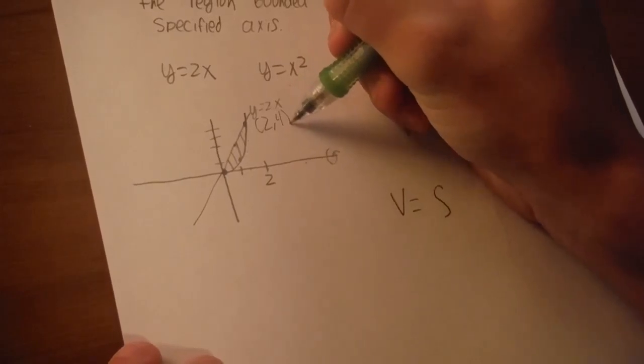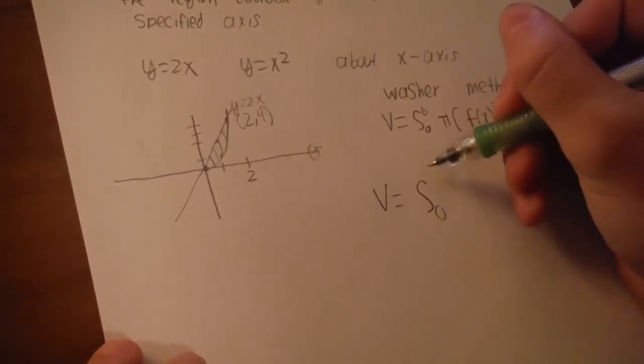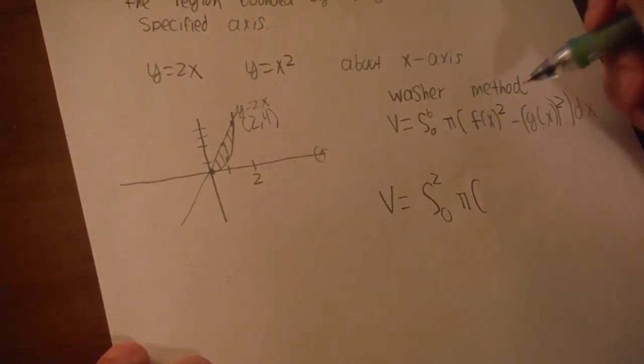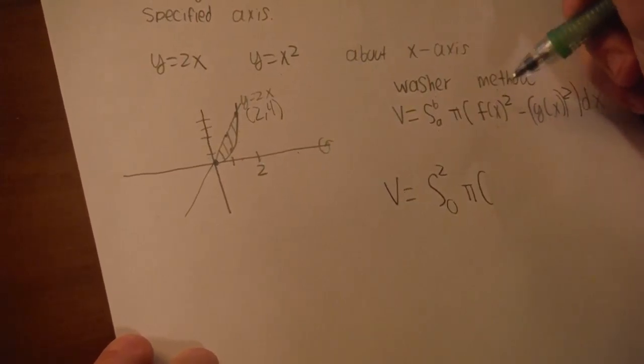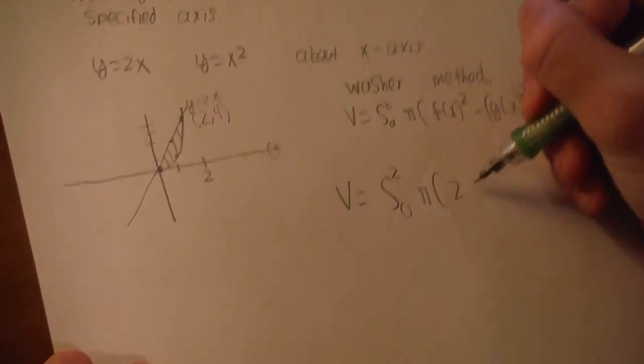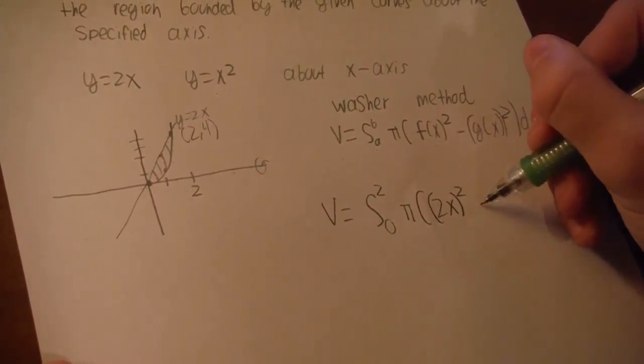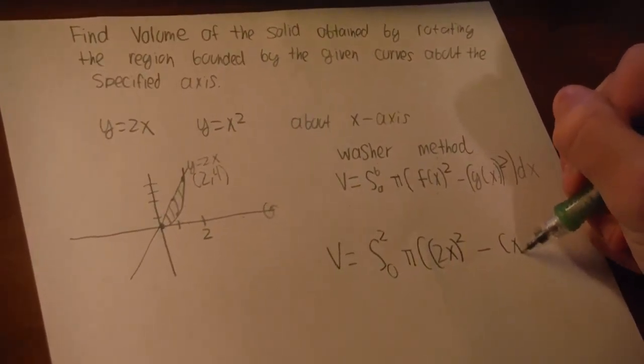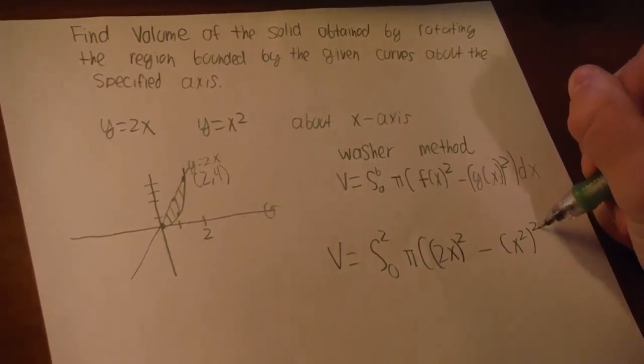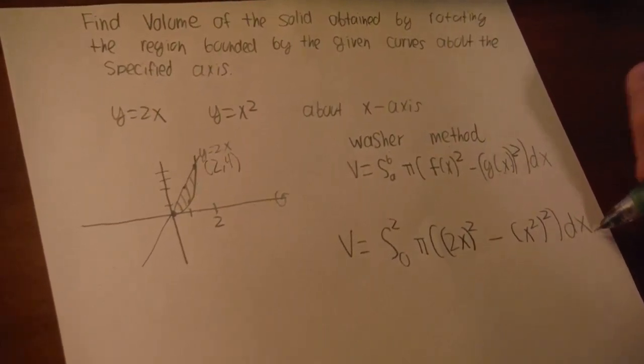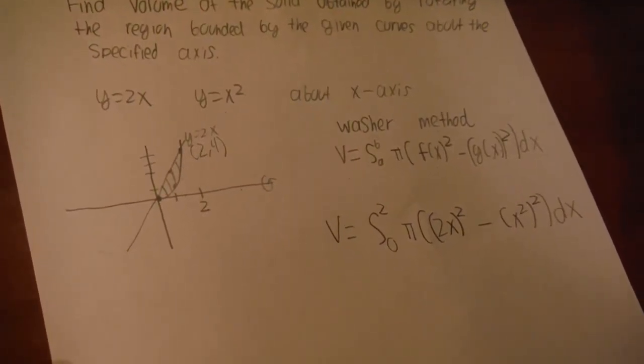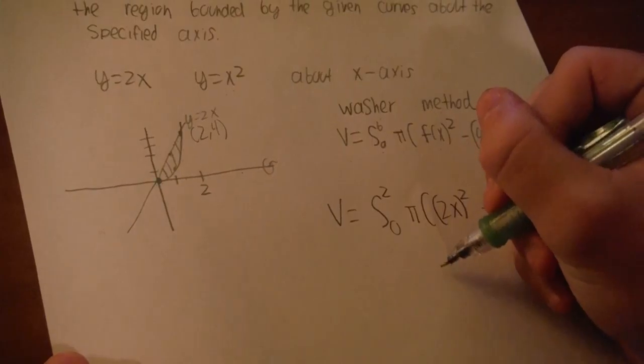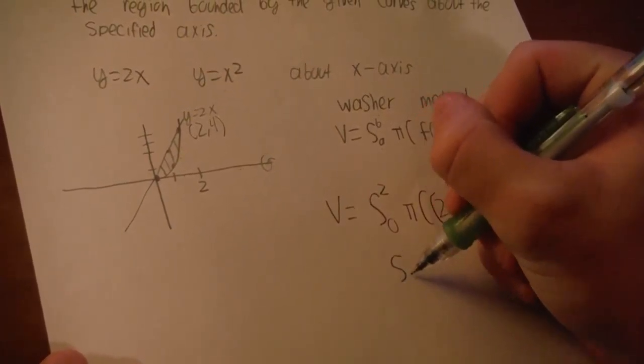If we're going to do this, the volume is the integral from 0 to 2, because they meet up here at this point at 2, 4. From this point, we're going to do 0 to 2, the integral of pi times, like I said before, f of x will represent 2x, so 2x, this is squared, minus g of x will be x squared, so x squared, this is squared, dx. This is how you set it up in order to solve the integral.